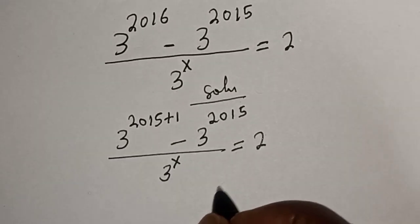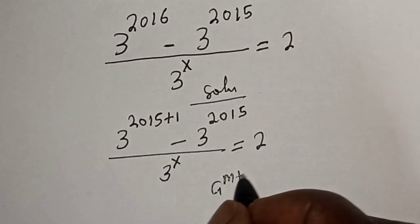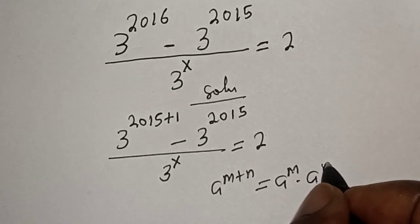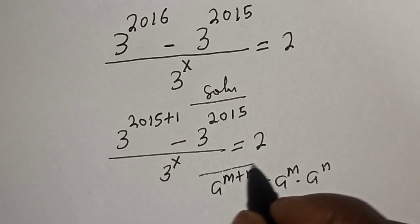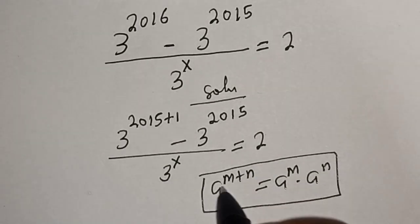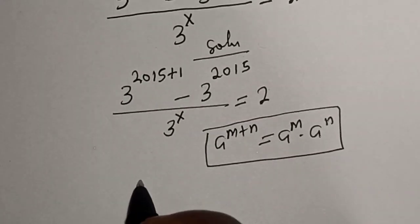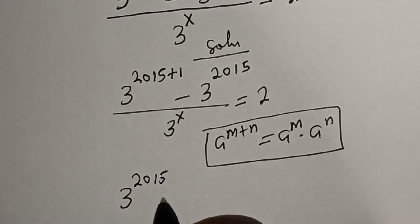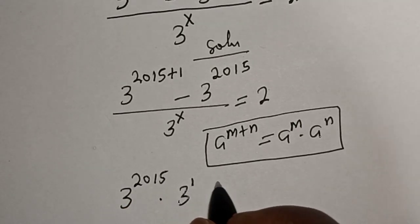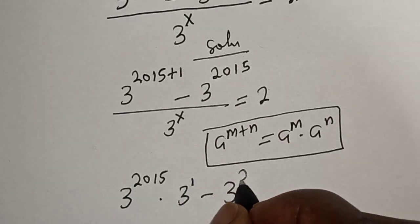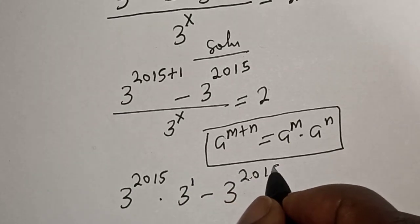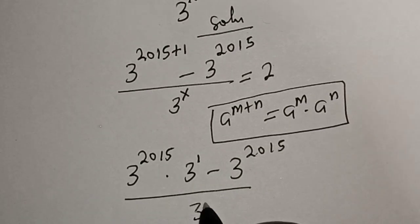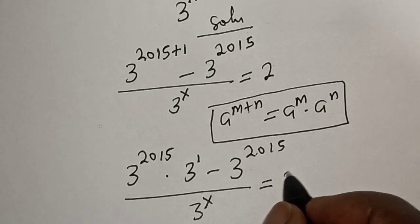Remember this rule: a raised to power m plus n is equal to a raised to power m multiplied by a raised to power n. So we have 3 raised to power 2015 multiplied by 3 raised to power 1, minus 3 raised to power 2015, over 3 raised to power s, is equal to 2.